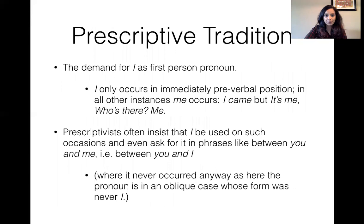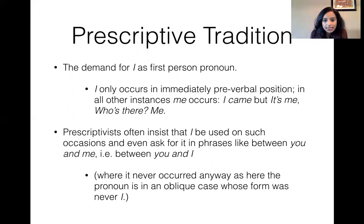There is also the demand for 'I' as first-person pronoun — 'I came,' but 'it is me who's there' because of the different positions: 'I' in the subject position and 'me' in the object position. So there's this distinction between subject and object, and people often misuse 'I' in phrases like 'between you and I' rather than 'between you and me.' Many uses of pronouns in this respect go back to the prescriptive tradition.